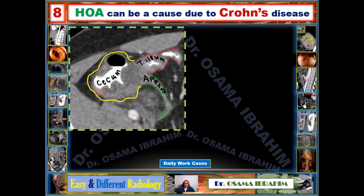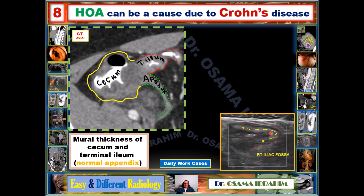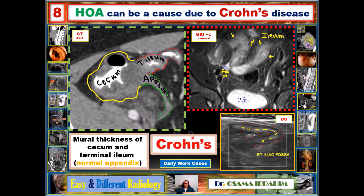These CT examinations are from a patient from my daily work who presented with suspected appendicitis. The appendix appeared normal, but the ileum was thickened. Ultrasound showed a tubular structure with thickened wall at the right iliac fossa — not a blind-ending tube — indicating ileal pathology, not appendicitis. MRI with contrast showed enhancement of the wall of the ileum. Combined with laboratory tests, these findings confirmed a diagnosis of Crohn's disease. In such patients, I should also examine the bones for periosteal reactions.